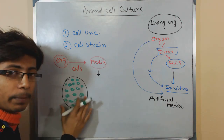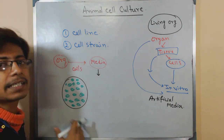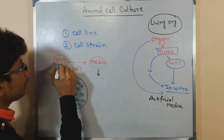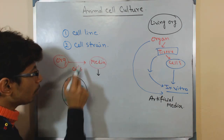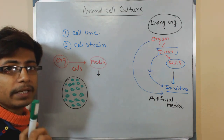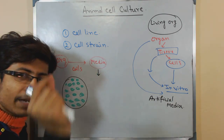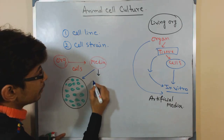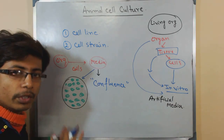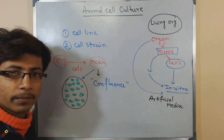From that particular stage — from the beginning where we take the cell from the organism, place it into the media, until it reaches confluence — the whole process is termed primary culture, or primary cell culture. Once the media is completely depleted, the cells will no longer grow because there is no further media to support their growth.